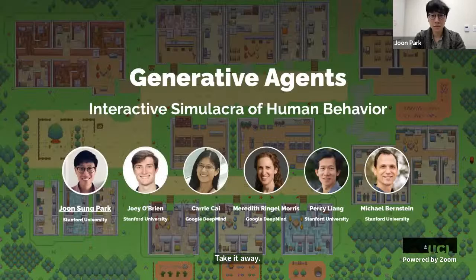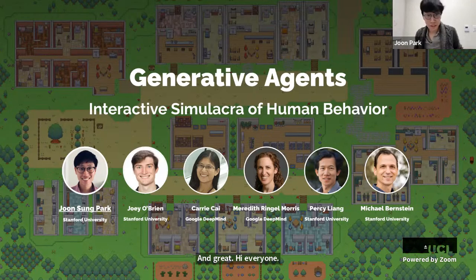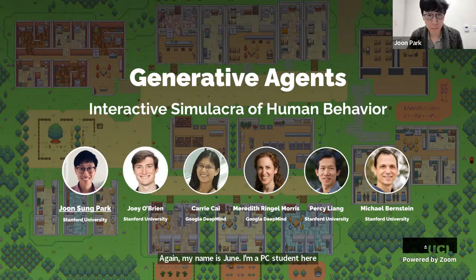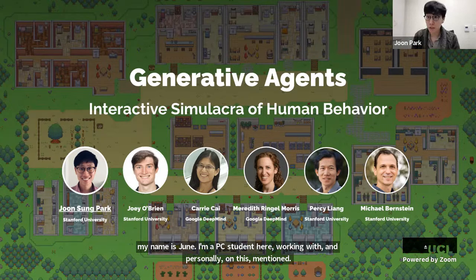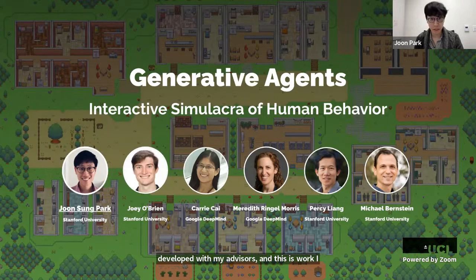Wonderful. Hi everyone, I'm really excited to be here. My name is June, I'm a PhD student working with Michael Bernstein and Percy Liang. Today I will talk to you about Generative Agents: Interactive Simulacra of Human Behavior. This is work I developed with my advisors Michael and Percy, as well as my mentee Joy O'Brien and mentors Mary Morris and Carrie Kai.